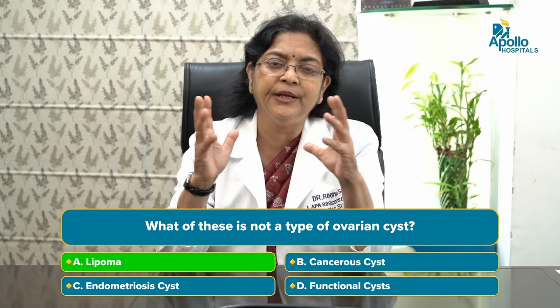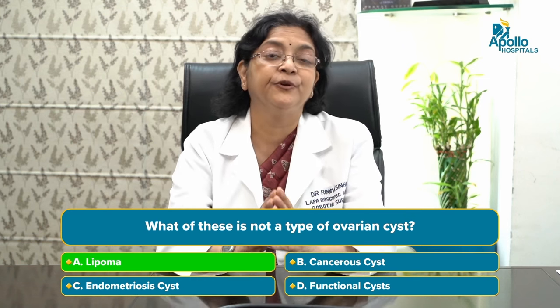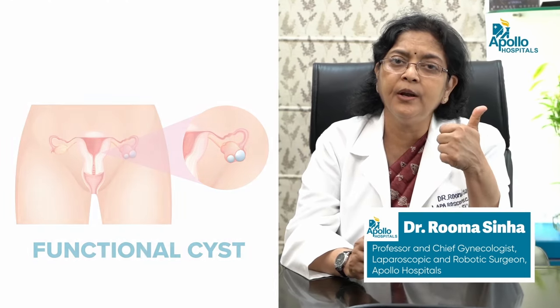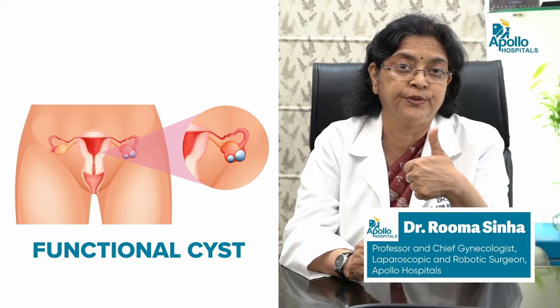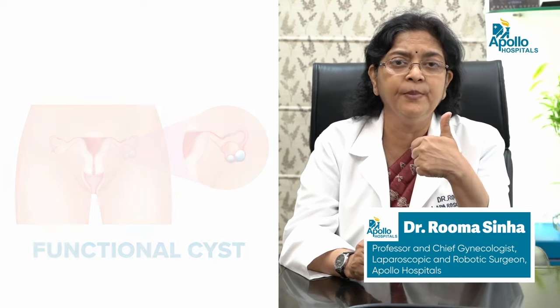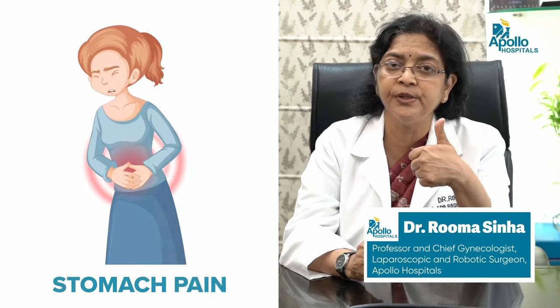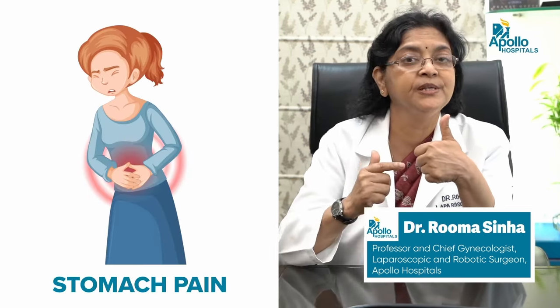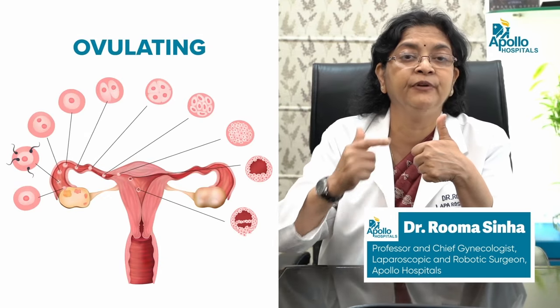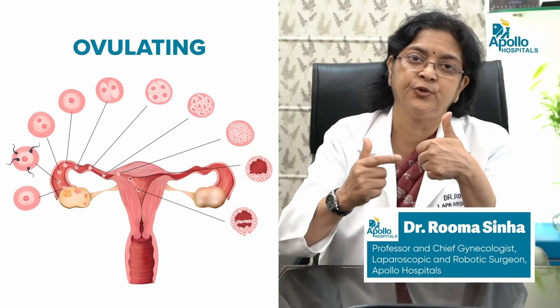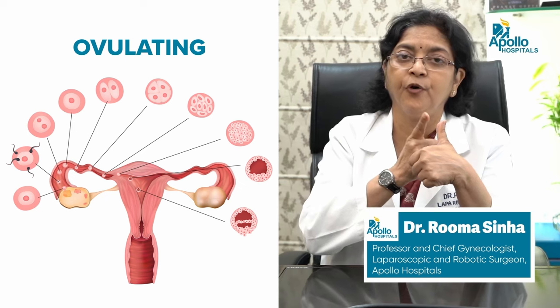If we look broadly at the types of cysts that can be in the ovaries, there are basically three types. The first is the functional cyst, related to hormones. These cysts can form in any woman who is ovulating, so they will be seen in the reproductive age group when women are ovulating, having children, and so forth. These cysts are because of hormones and they may disappear on their own.